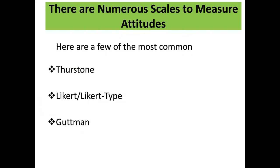There are numerous scales to measure attitudes. Here are a few of the most common: Thurstone, Likert-type, and Guttman.